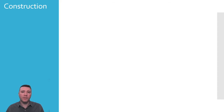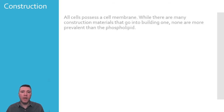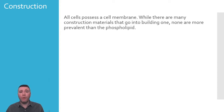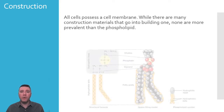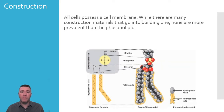All cells, be they eukaryotic — animal, plant, or fungal — or prokaryotic cells, have a cell membrane. There are a variety of molecules that are necessary for the construction of a cell membrane, but the most numerous of them is the phospholipid.